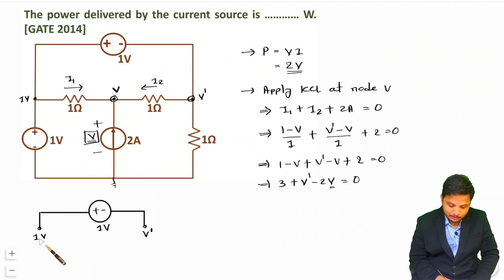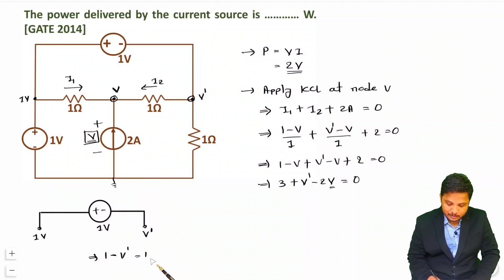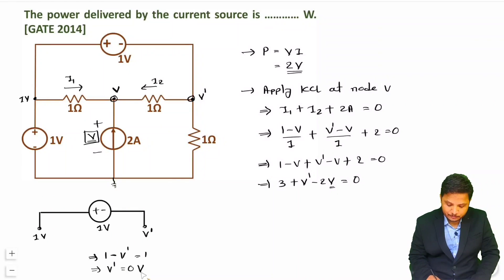Based on this, 1 minus V dash equals 1. So the positive terminal minus the negative terminal V dash equals the source voltage 1, which means V dash equals 1 minus 1, so V dash equals 0 volts.